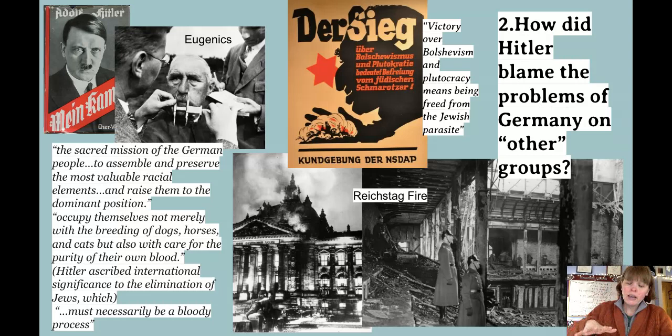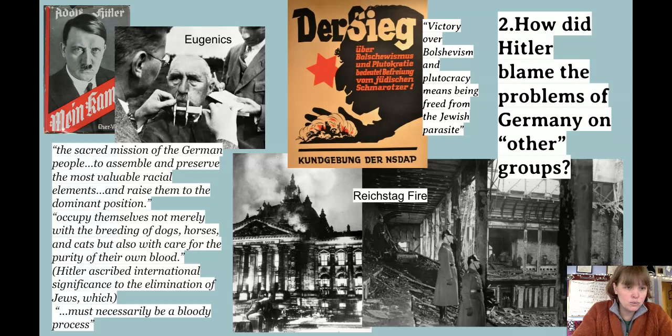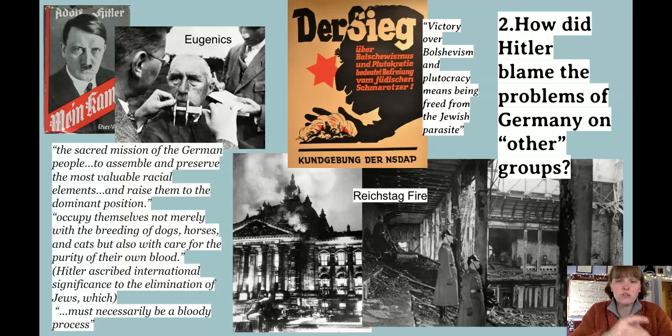Question number two: how did Hitler blame the problems of Germany on other people? Germany was depressed economically, socially, and intellectually. Hitler came along with his book Mein Kampf — 'my struggle' — in which he talks about his personal struggle and compares himself to the country of Germany and the German people as a whole.